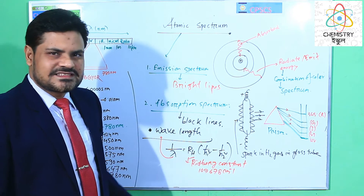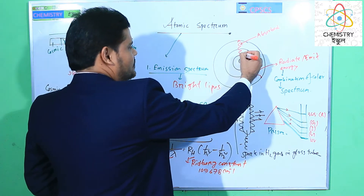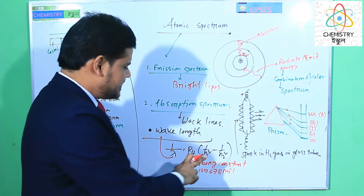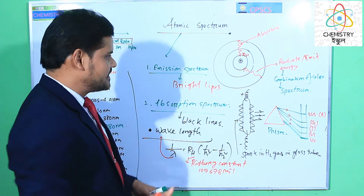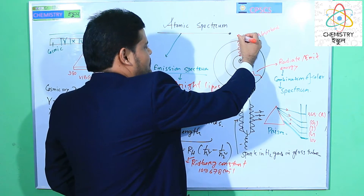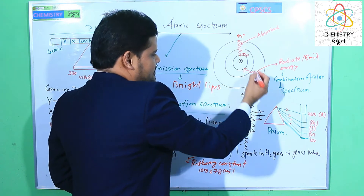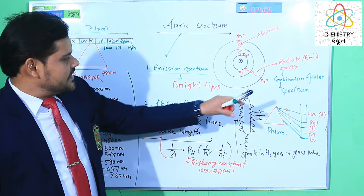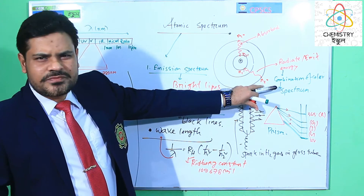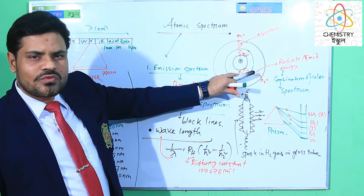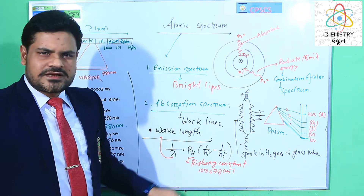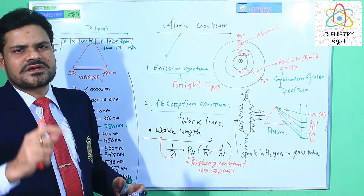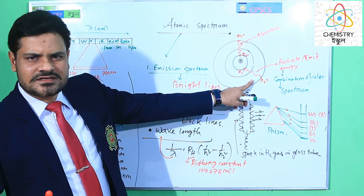N1 is the lower energy level and N2 is the higher energy level. For example, we can get N2 = 3 and N1 = 1. If we put these values into the equation, we can easily find out the wavelength of the definite spectrum. When the electron jumps from the higher energy level to the lower energy level — from the third to the first — we can find out different types of spectrum.